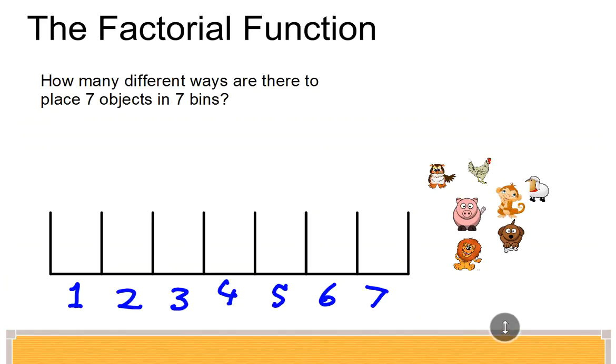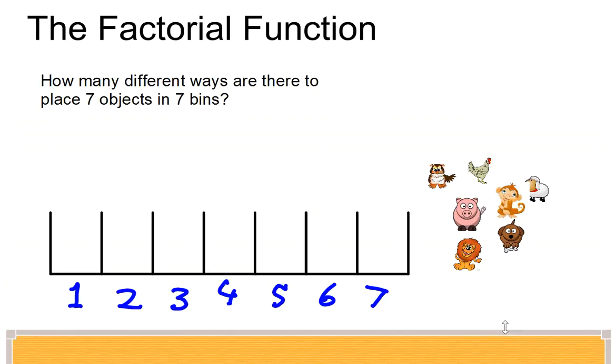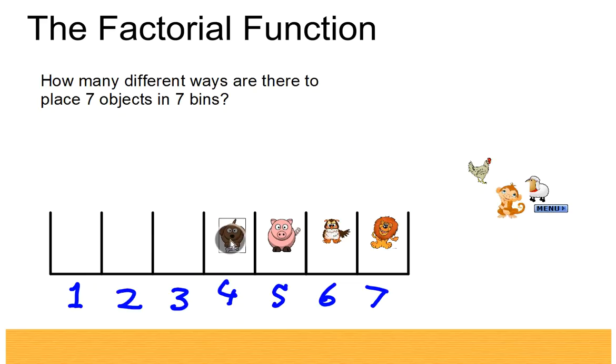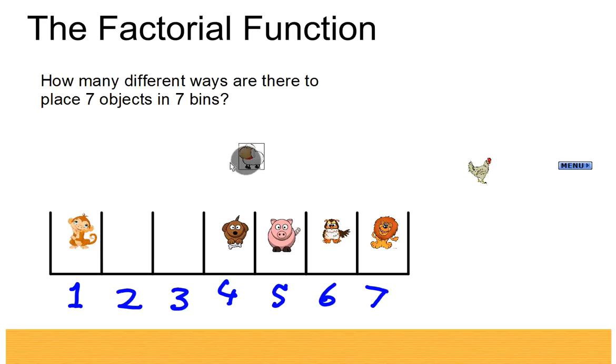Here are seven objects—different types of animals—and we want to put them into the seven bins. The only constraint is that each bin has to hold exactly one of the animals. That's a possible arrangement. The question is: how many arrangements like this can we have?